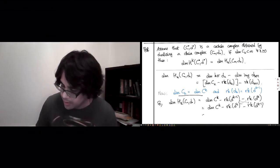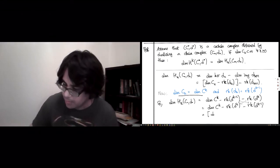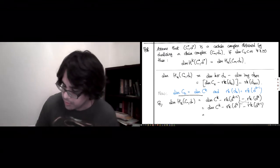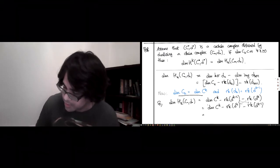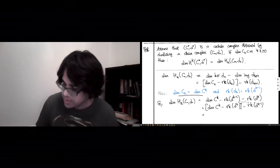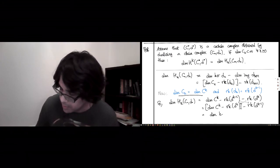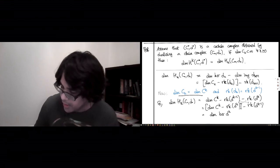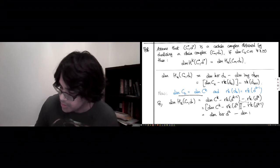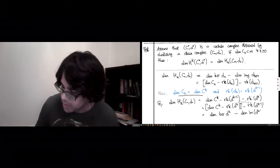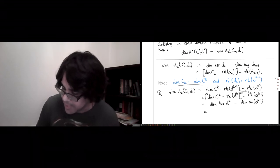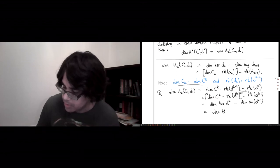And of course, this bit is just going to be, if you put it in brackets, this is just the kernel, the dimension of the kernel of D^K. And the other thing is just the dimension of the image of D^{K-1}. So, this is exactly the dimension of the K-th cohomology group of the dual.